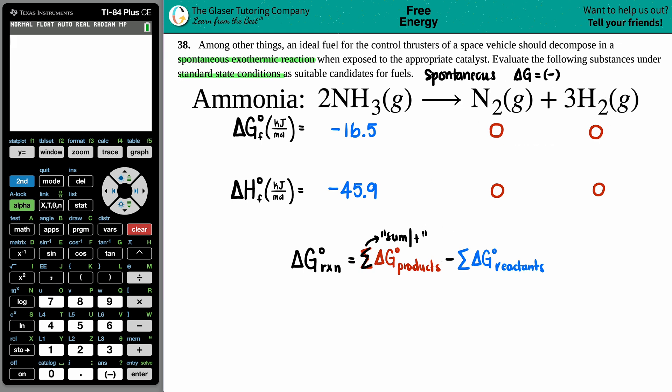Are these delta G values going to be the same or different? It goes by the coefficients. You have 2NH3, you have one N2, and you have 3H2. These values in the back of the book are only for one of your compound, so you have to multiply each value by that coefficient.